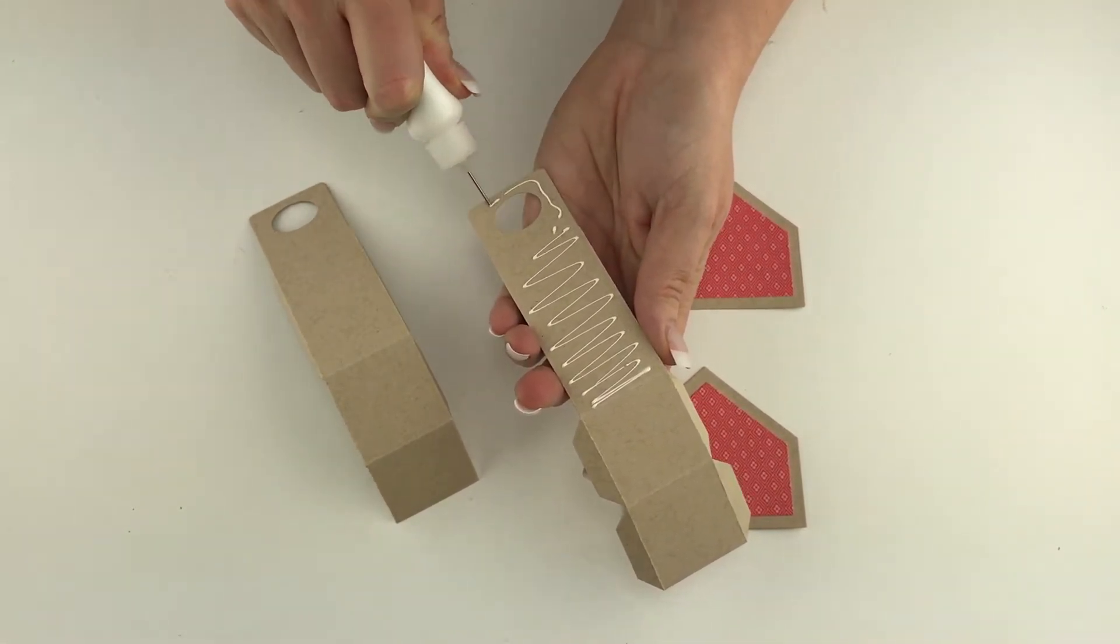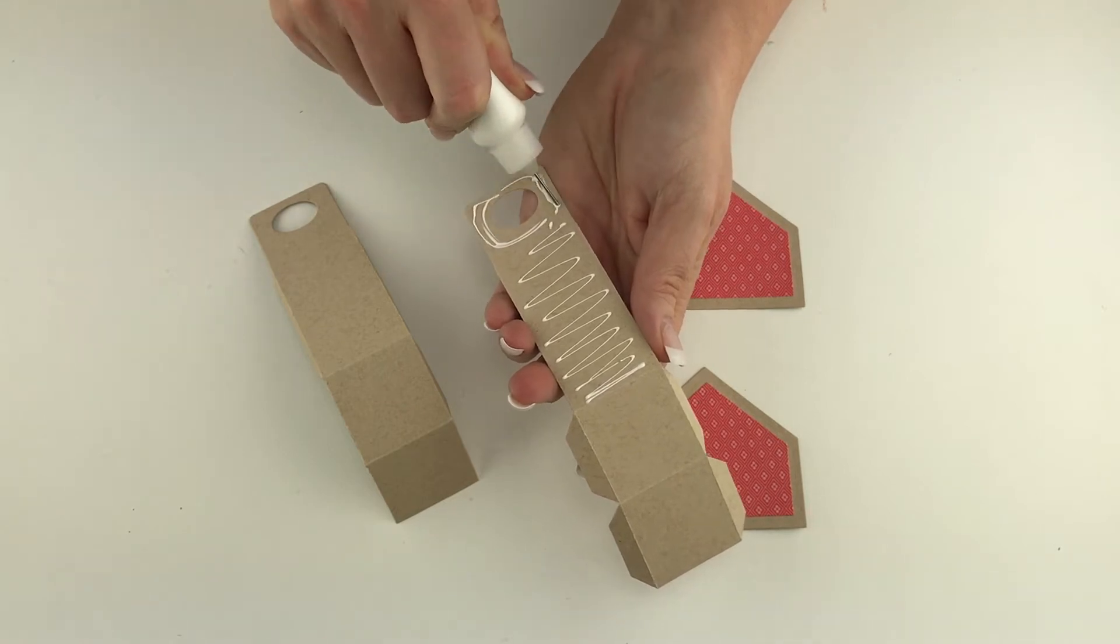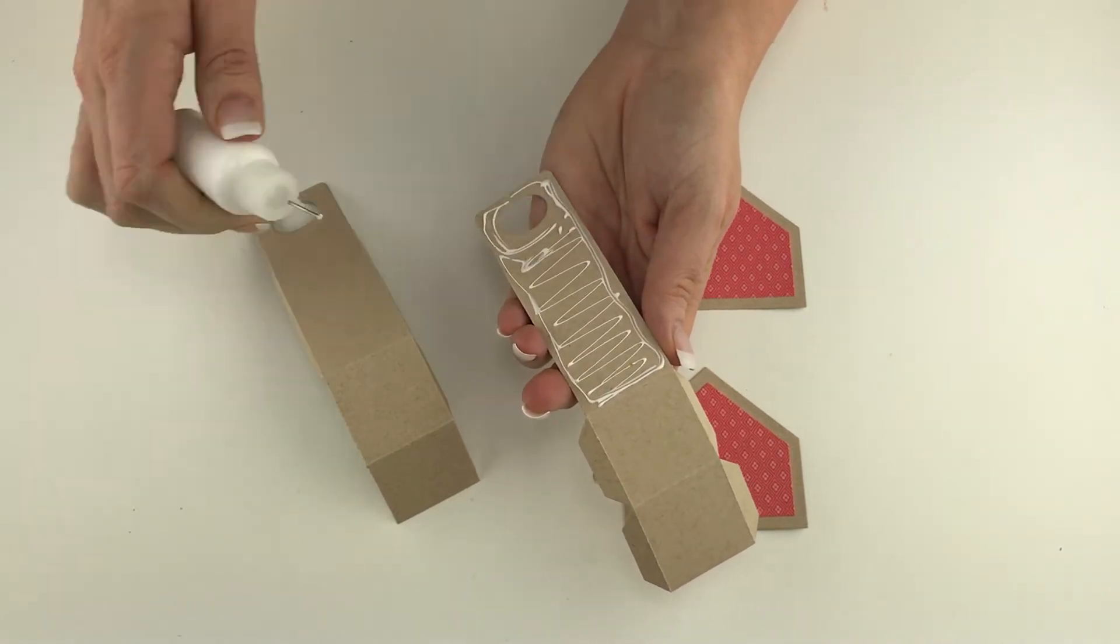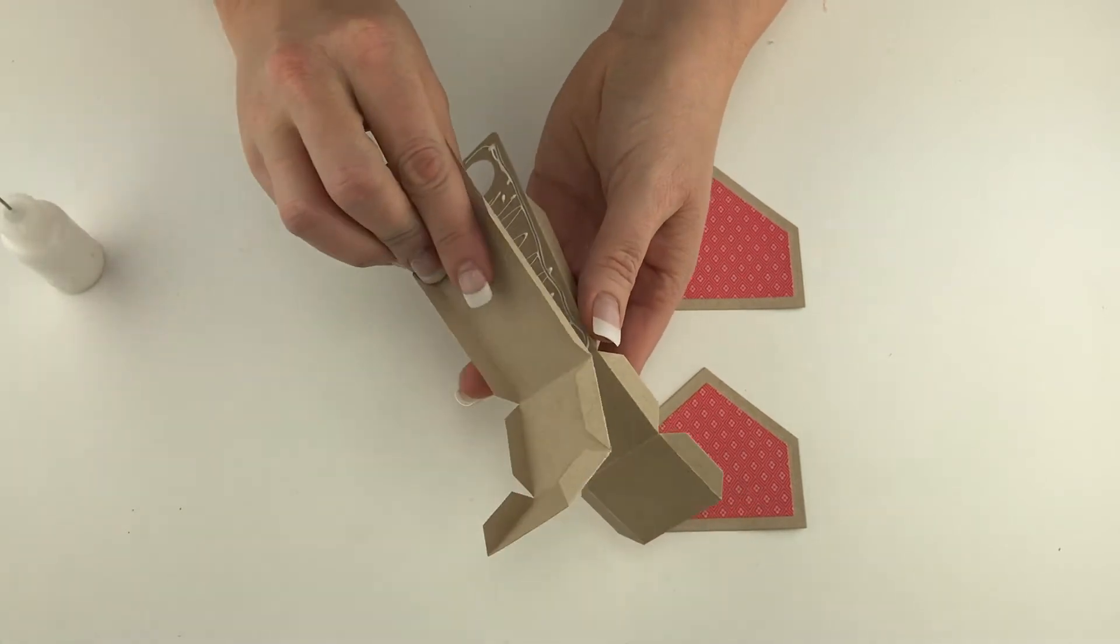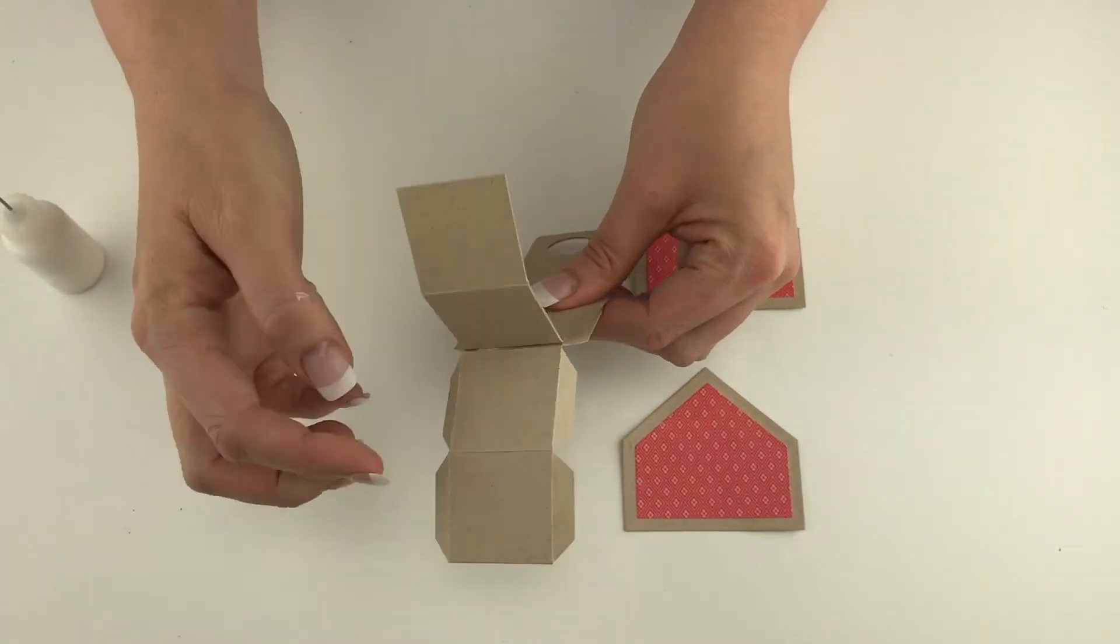Just in this top section with a little handle. Make sure you get glue all the way to the edge so it doesn't come apart on you. Then we'll just line those up back to back. Make sure the bottom is even and you can wipe away any excess glue.